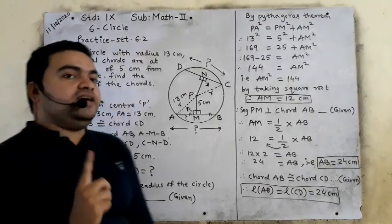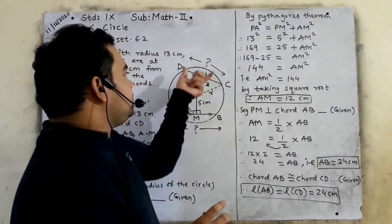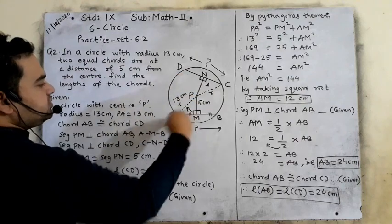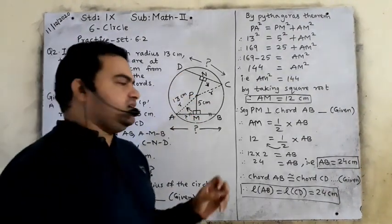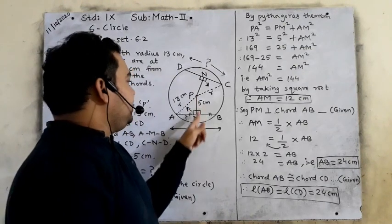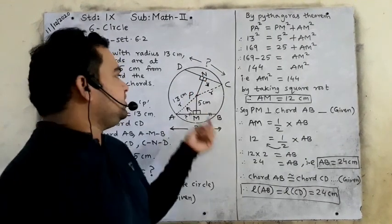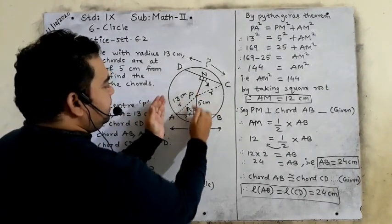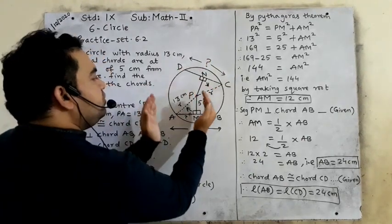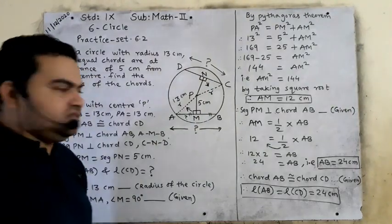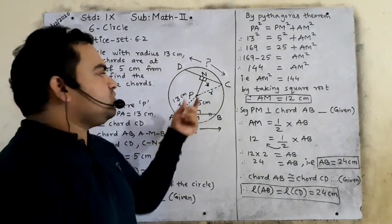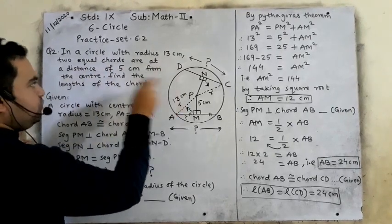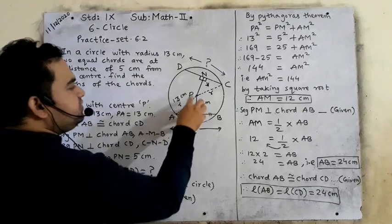Two equal chords — segment AB equals segment CD. At a distance of 5 cm from the center, meaning PM equals 5 cm and PN also equals 5 cm. PC is the radius, so radius is 13 cm. We will utilize triangle PMA, which is congruent to triangle PNC, and then show that chord AB is congruent to chord CD.